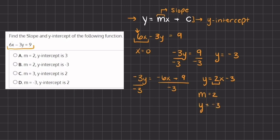You can find the y-intercept in two ways: the first way is to set x equal to 0, or you can completely convert the original equation into slope-intercept form and then easily recognize your slope and y-intercept. In this case, the coefficient of x is 2, so that is our slope, and the constant negative 3 is our y-intercept. Therefore m equals 2 and the y-intercept is negative 3. In our example here, the answer is b.